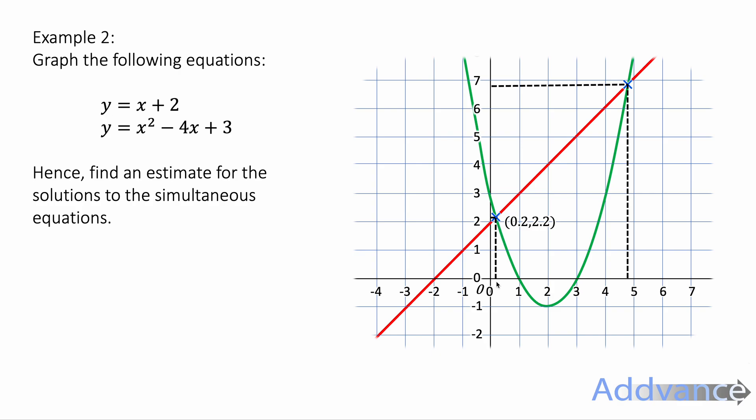So I'm guessing that is about 0.2 across and 2.2 up. In the exam, if you wrote 0.1 and 2.30, you would get the mark because you are within one decimal place.